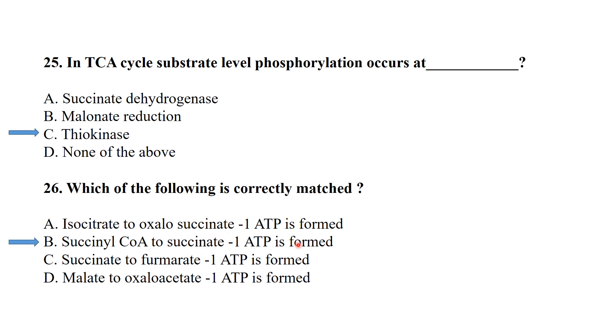Which of the following is correctly matched? Succinyl coenzyme A to succinate — this conversion will produce one GTP, so it is a correct match. The ATP produced during the Krebs cycle occurs during the conversion of succinyl coenzyme A to succinate.